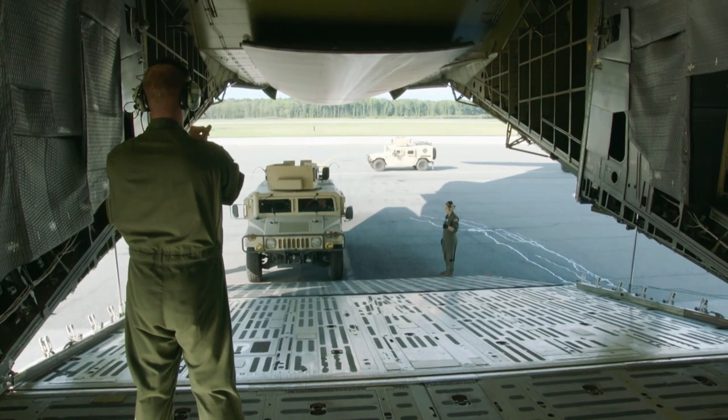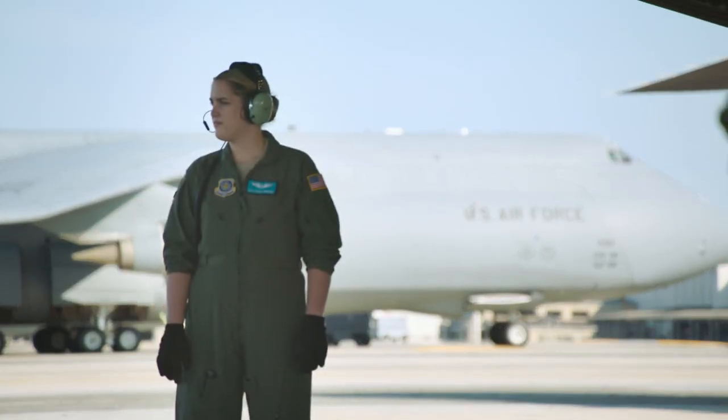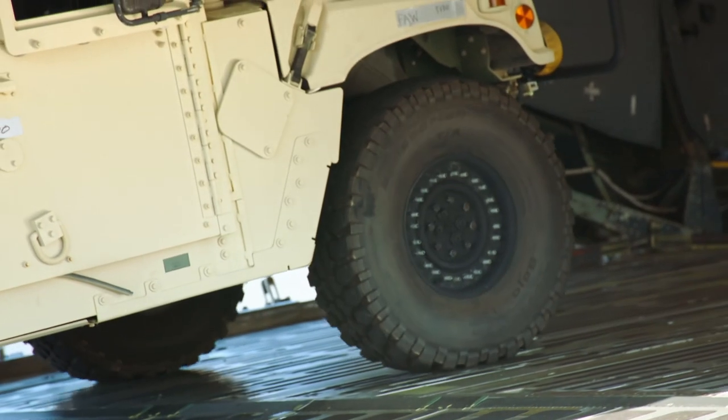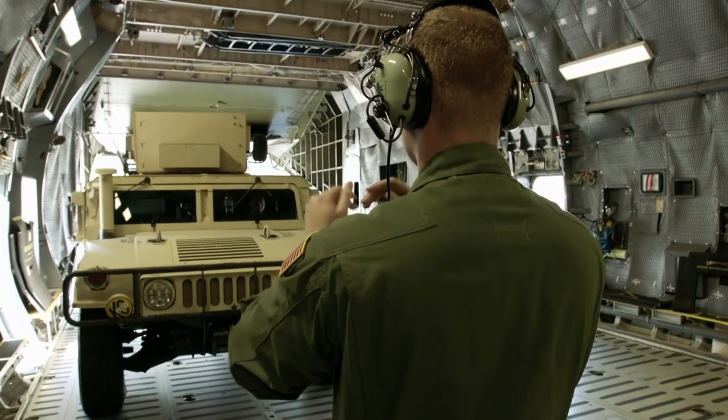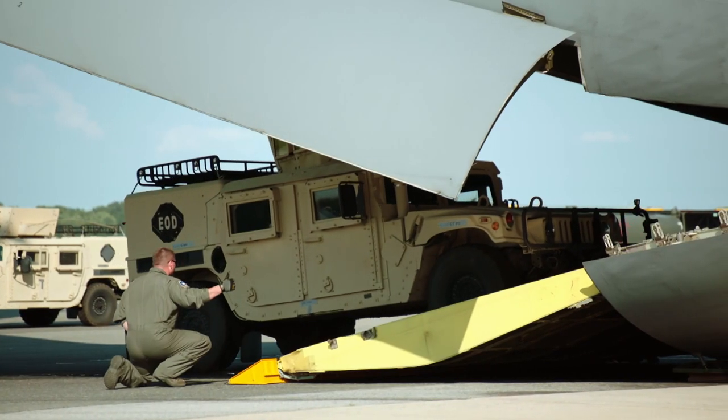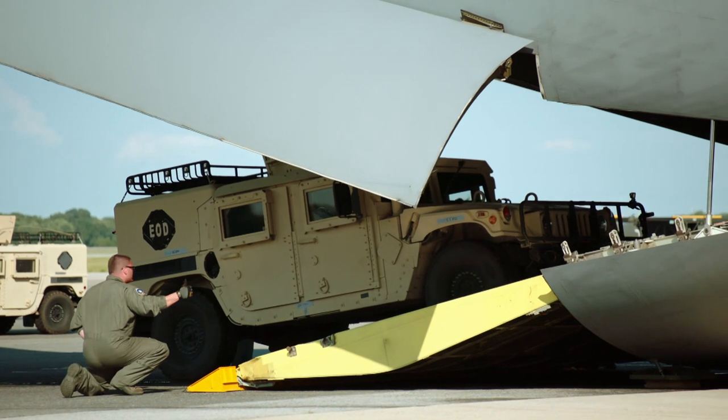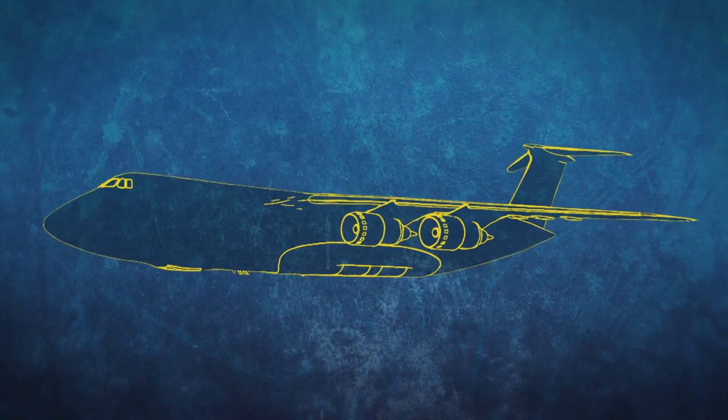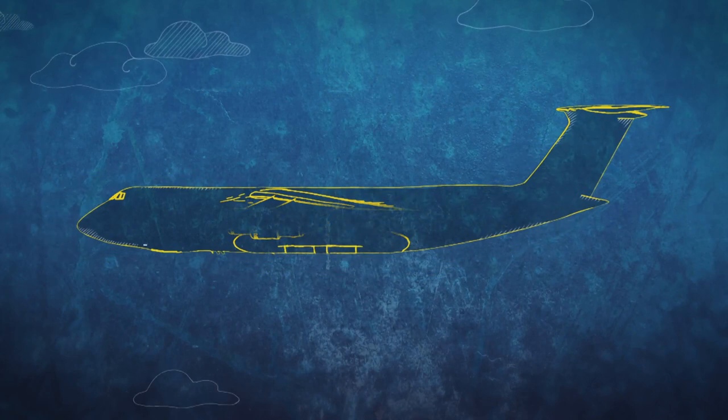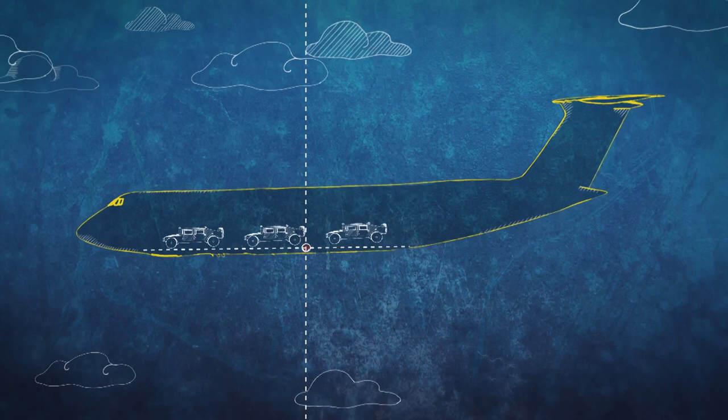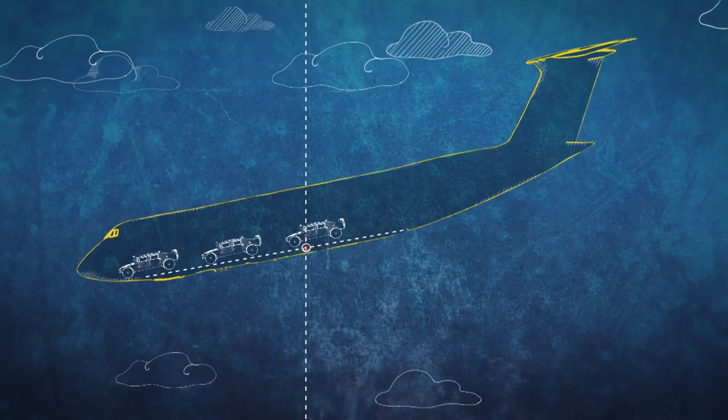But such a massive load can't just be placed randomly in the cargo hold. They know it'll fit in, but where do you put it? Where does its weight sit? How does that affect the centre of gravity, the balance of the aeroplane? With vehicles weighing different amounts, the distribution of weight on the plane must be precise. It's a lot like balancing a seesaw. Too much weight at the front or back, and the plane will be very difficult, or worse, impossible to fly.